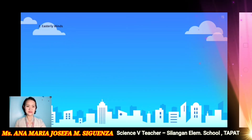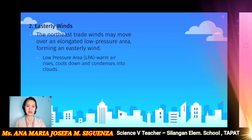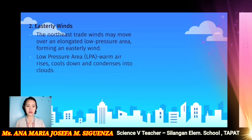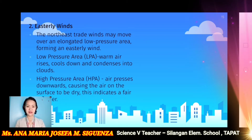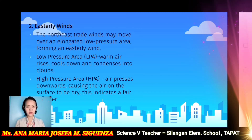Next, we have the easterly winds. The easterly winds are the northeast trade winds. They may move over an elongated low pressure area, forming an easterly wind. This includes the low pressure area, where warm air rises, cools down, and condenses into clouds. And the high pressure area, where air presses downward, causing the air on the surface to be dry, indicating fair weather.